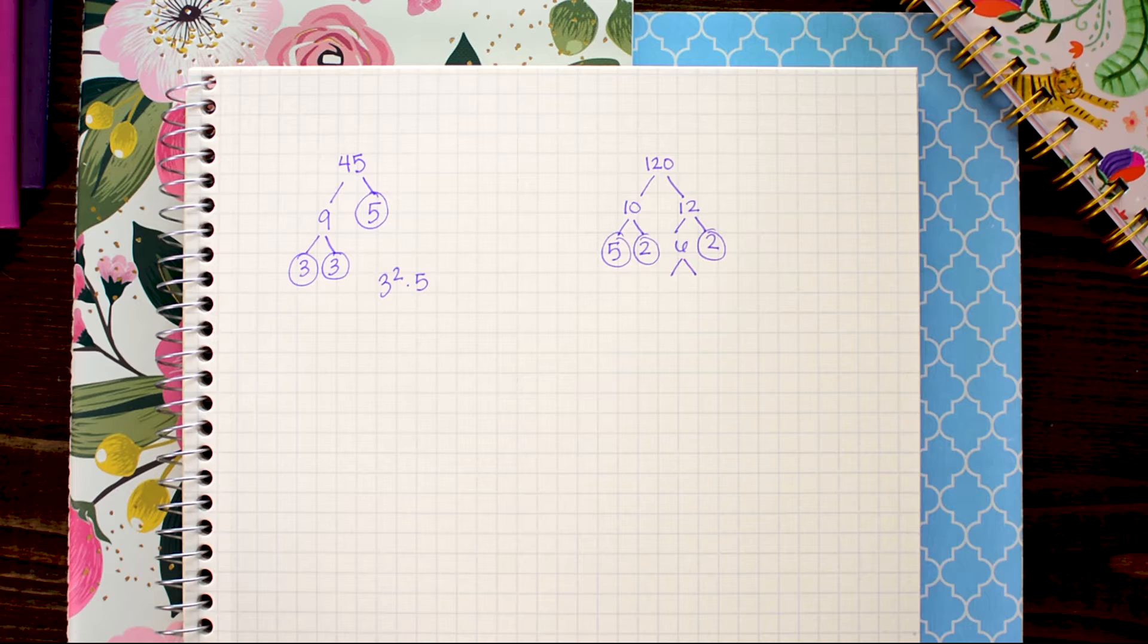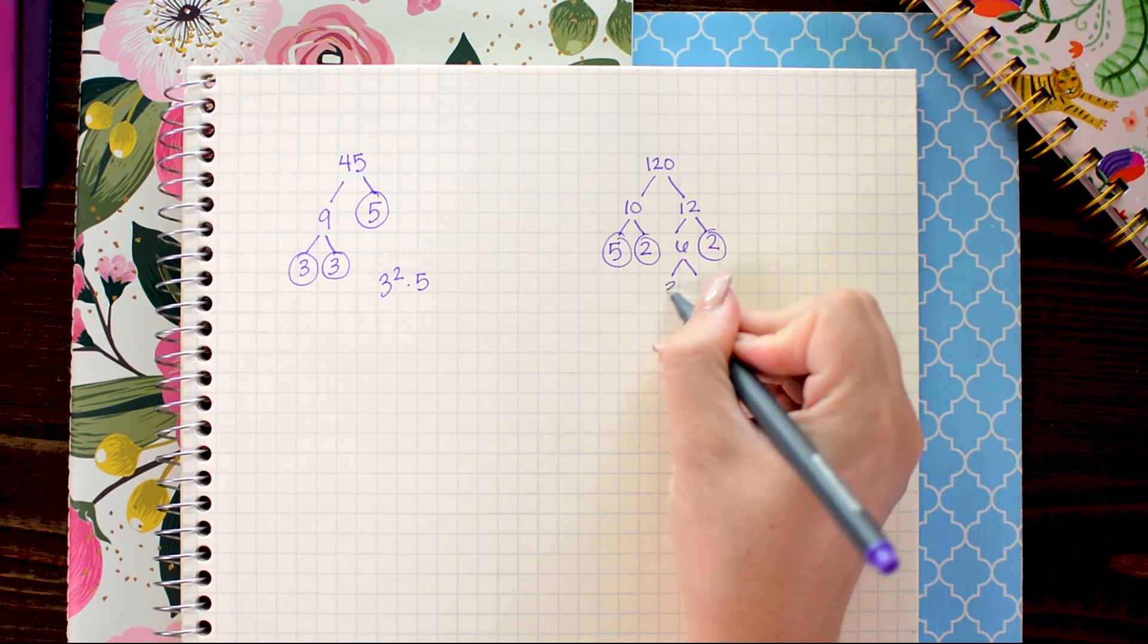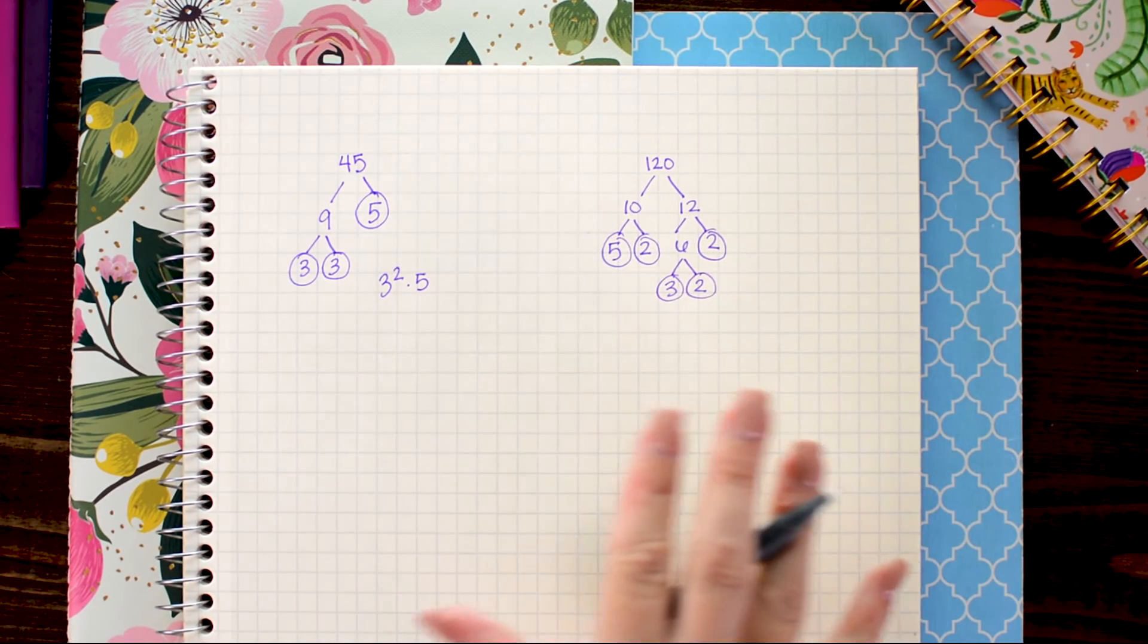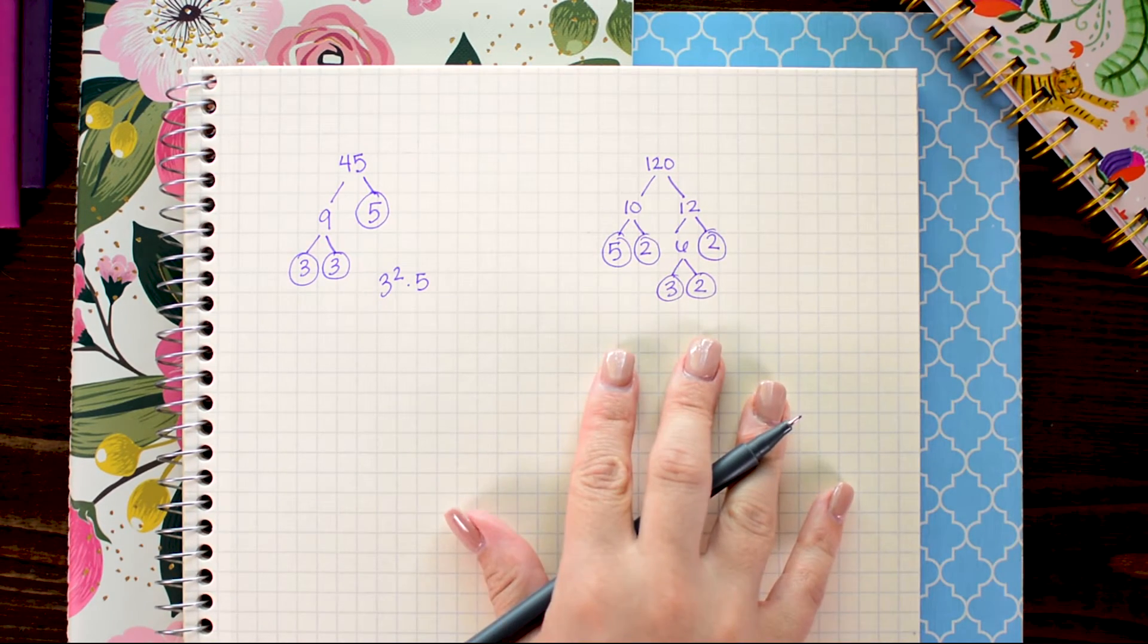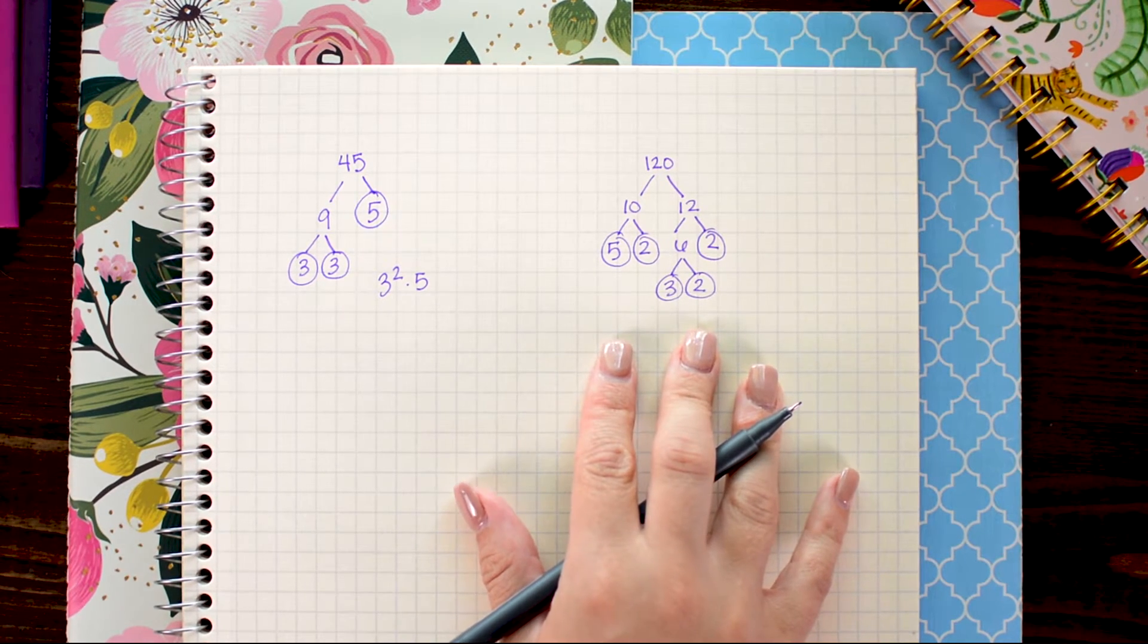And the last two numbers I need to write here to get 6 is 3 times 2 and those are prime so that's done. This is now my complete factor tree and I can write the prime factorization.